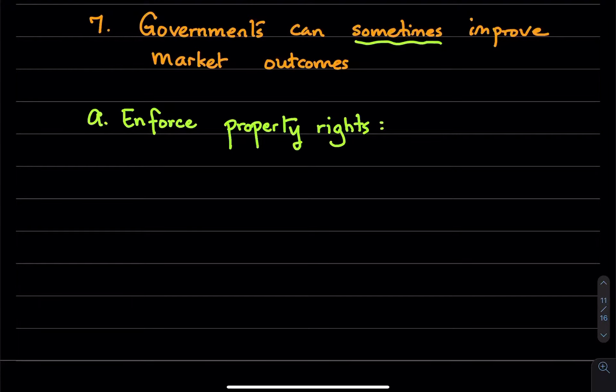The last principle that we had seen talked about the market economy and how that works in a decentralized way and how the invisible hand is at work and it's so smooth and everything comes together. So we might wonder why do we need the government? One purpose of studying economics is to refine our view about the proper role and the scope of government policy.